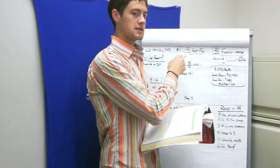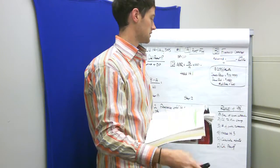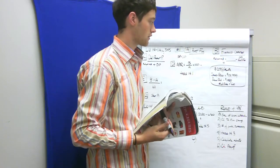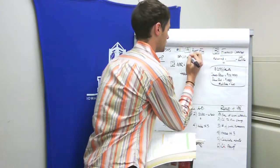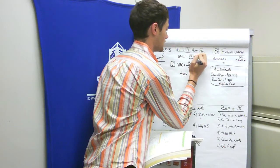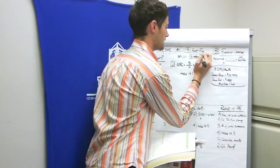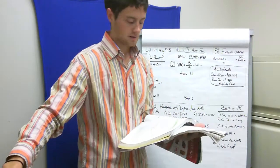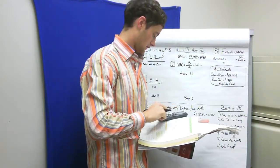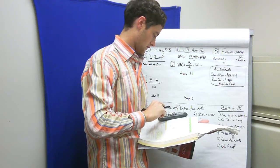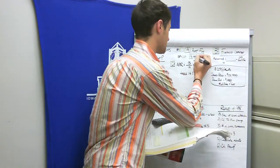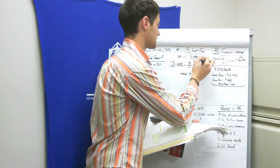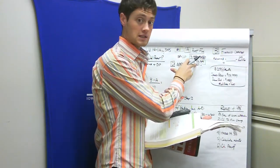We know our amount financed is our selling price minus our down payment. Sales price is $13,999. So $13,999 minus our down payment of $1,480 will get us our amount financed. When I plug that into the calculator, I get $12,519. This is our amount financed, the loan I'm taking out.